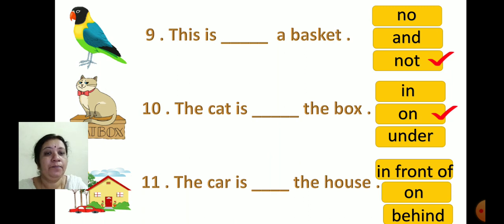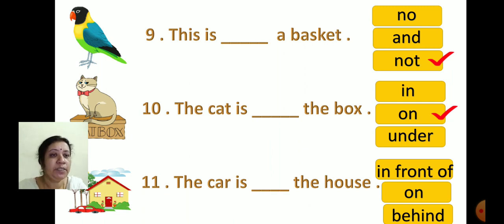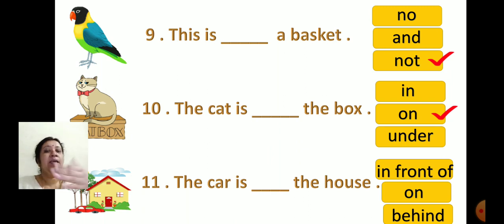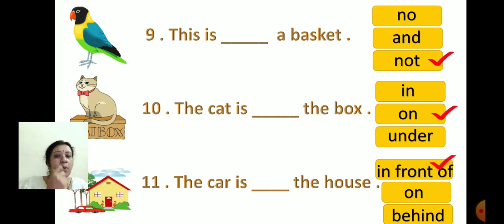Now see the next one: 'The car is dash the house.' The options are In front of, On, and Behind. Is the car in front of, on, or behind the house? In the picture, the car is in front of the house. So the correct option is 'in front of'. I will click on in front of.